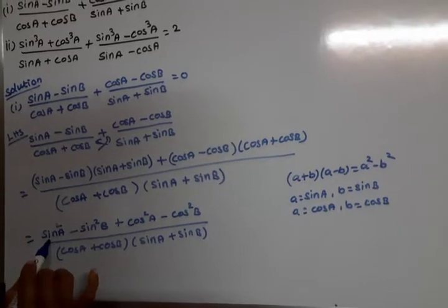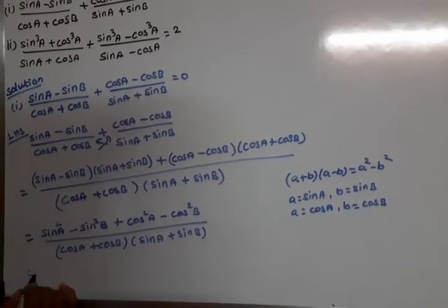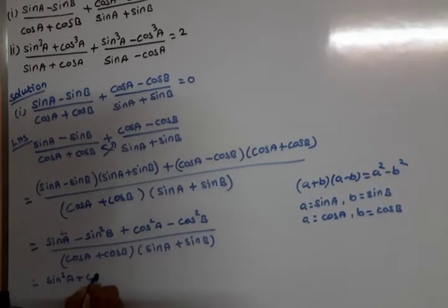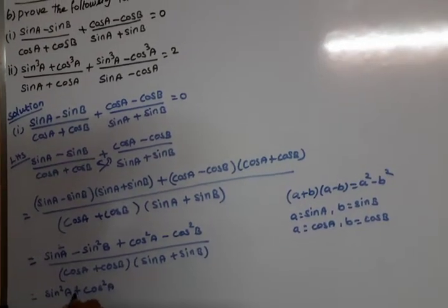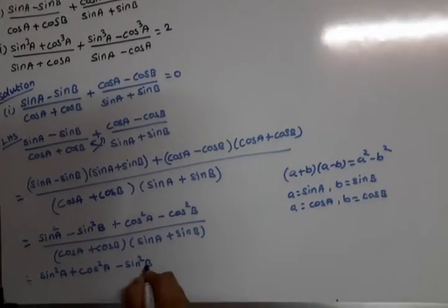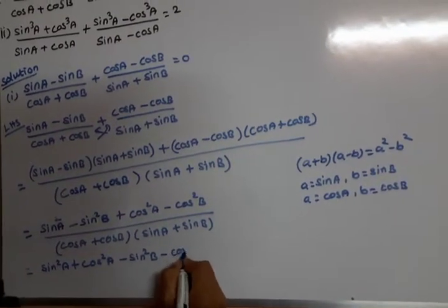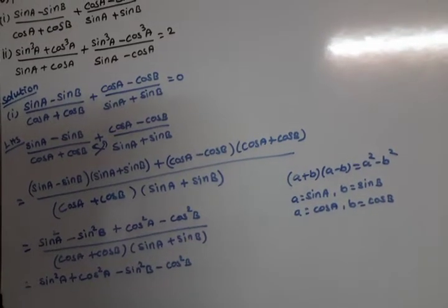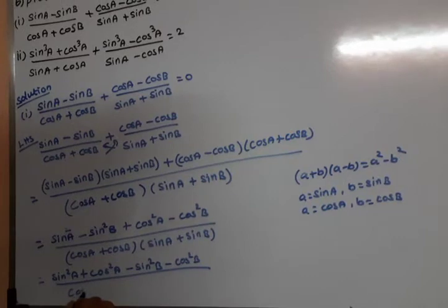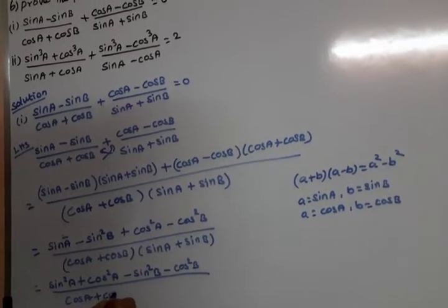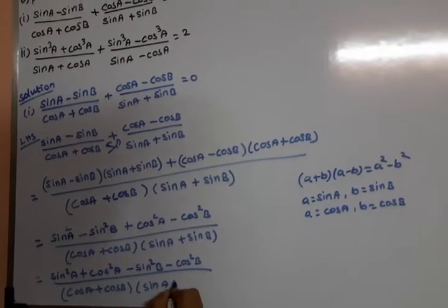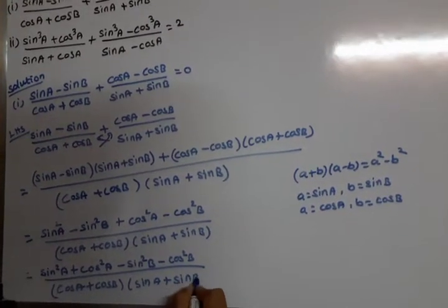The numerator becomes (sin²A minus sin²B) plus (cos²A minus cos²B), divided by (cosA plus cosB) into (sinA plus sinB).